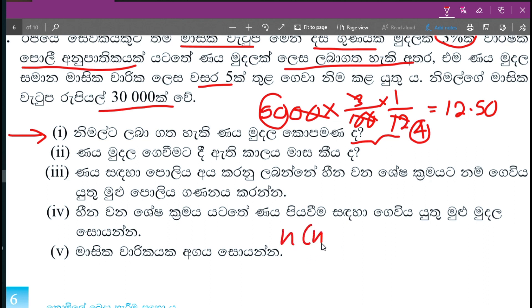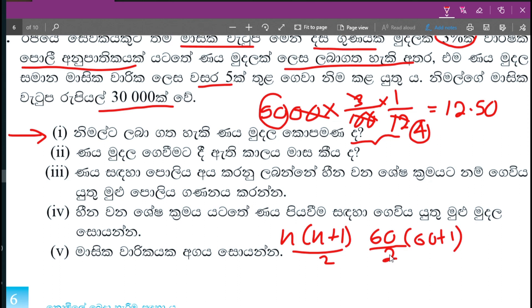We can see the same way as the general term. What we see at the end of the term is the most common term. If you look at this term, you see the most common term. That's the most common term. If you look at the most common term, you will see the most common term.